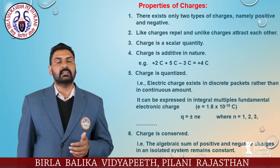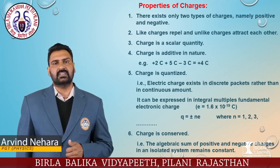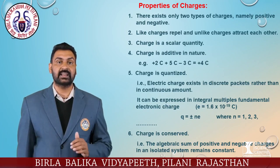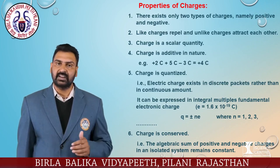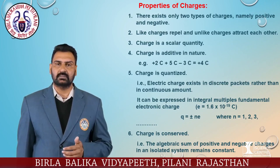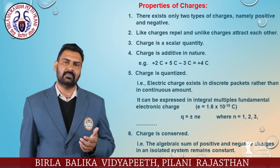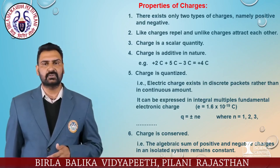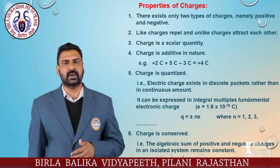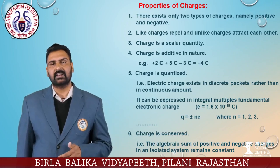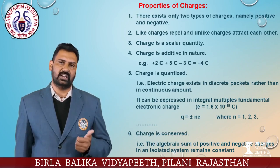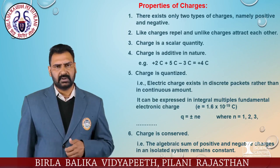The next property is charge is quantized — that is, electric charge exists in discrete packets rather than in continuous amounts. It can be expressed as integral multiples of the fundamental electronic charge e. The minimum value of charge is e, which is 1.6 × 10⁻¹⁹ coulombs. So we can write the quantization of charge as q = ±ne, where n is an integer and e is the minimum value of charge on an electron or proton.